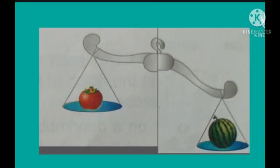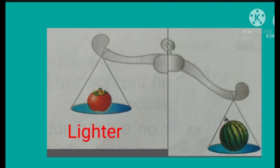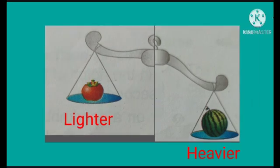For example, look at the balance. The pan with the watermelon is pushed down while the pan with the tomato moves up. This shows that the tomato is lighter than the watermelon, or the watermelon is heavier than the tomato.